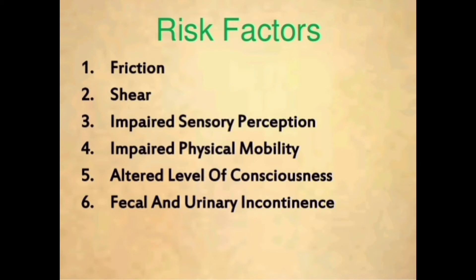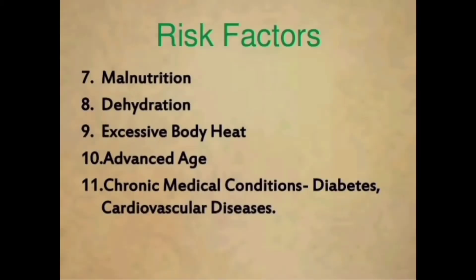Second is shear — a gravity force pushing down on the patient's body with resistance between the patient and the chair or bed. Third is impaired sensory perception. Next is impaired physical mobility, altered level of consciousness, fecal and urinary incontinence, and malnutrition. Malnutrition is a serious condition that happens when your diet does not contain the right amount of nutrients.